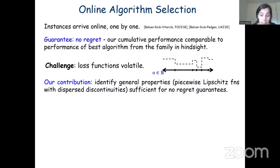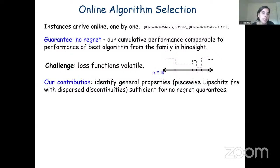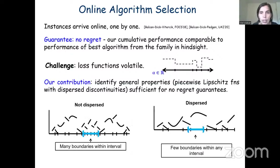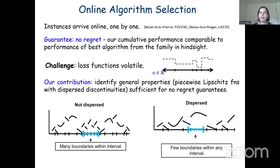Now I want to discuss another interesting formulation: online algorithm selection, which is relevant when instances arrive online one by one. So far we discussed the case where we're given all instances at once, but what if they come online? In that case, we want to achieve no-regret guarantees, meaning the cumulative performance of our learning procedure is comparable to the performance of the best algorithm from the family in hindsight. The challenge is that utility functions from data-driven algorithm design are very volatile — they can have many sharp discontinuities — so we cannot apply existing techniques from online learning theory.